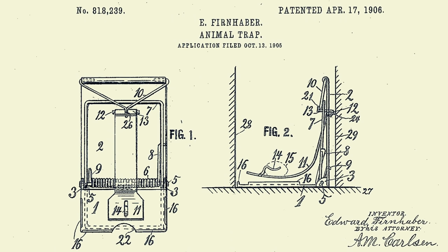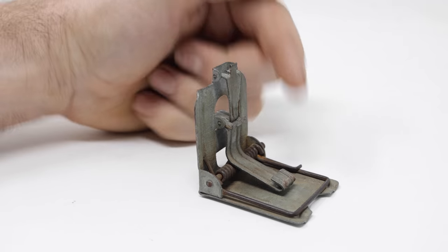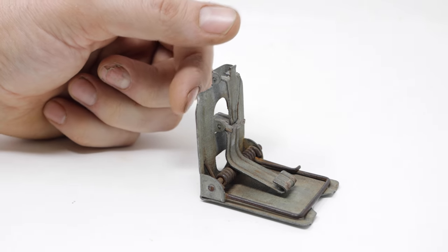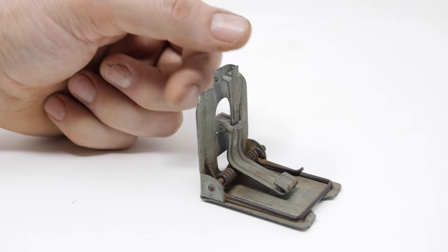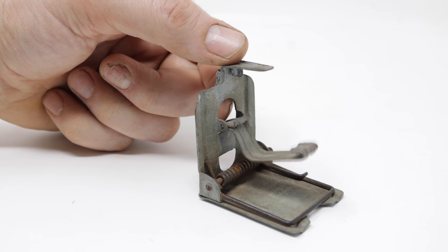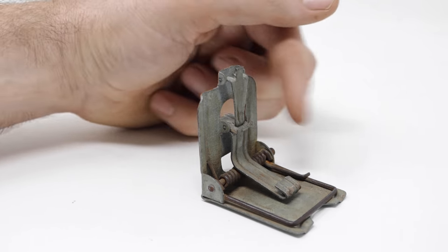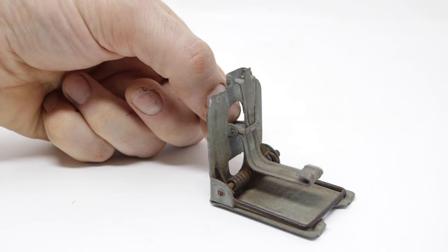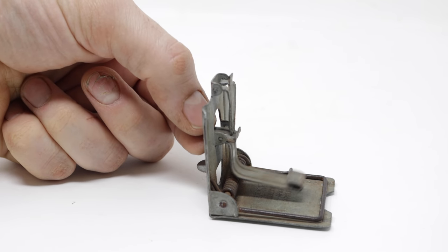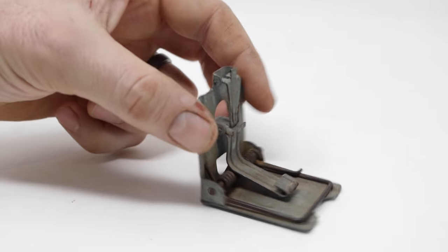And the design of this mousetrap was intended to be a safe alternative to some of the flat snap traps where you could smash your fingers trying to set it. The key is this double trigger system. There's an upper piece that goes up and down like this, and down below is the lower trigger. You place the bait right there, and in the back, there's a lever, so you can set it without having your fingers anywhere near the kill bar.